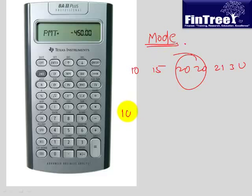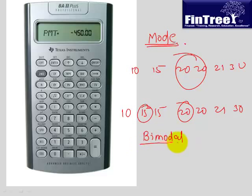At times you can have a data like this: 10, 15, 15, 20, 20, 21, 30. What is the mode now? You have two modes in this data. One is 15 and the other one is 20, and this data is called bimodal. There are two values which are being repeated twice. So it is not necessary that there has to be only one mode. There can be even five, six modes in a data if they are repeated with same frequency.